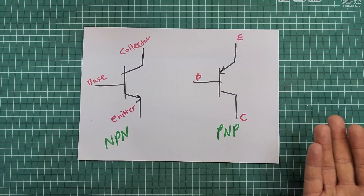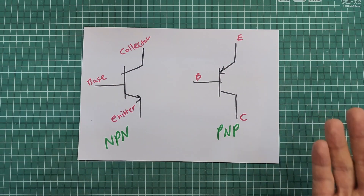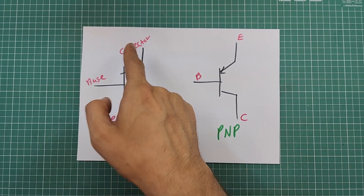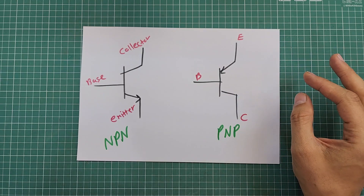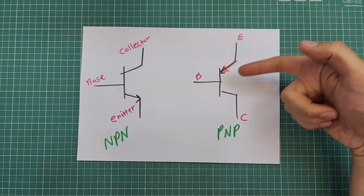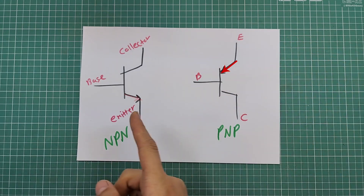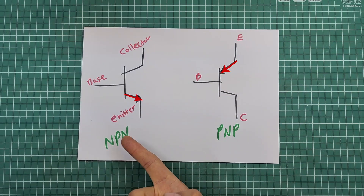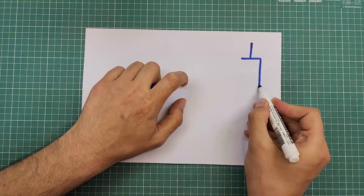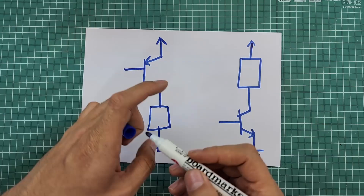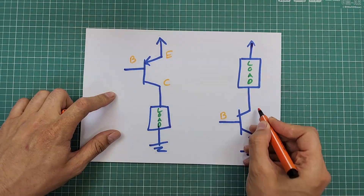These are schematic symbols of BJTs, or bipolar junction transistors. These transistors have base, emitter, and collector terminals, and are divided into NPNs and PNPs. Look — there's an arrow on the emitter terminal. If the arrow is inward, it's a PNP; if the arrow is outward, it's an NPN. Be aware that the arrow is always on the emitter terminal. For simplicity, NPNs are used for switching the low side of the power supply, and PNPs are used for switching the high side of the power supply.